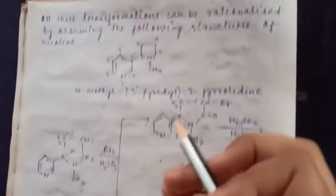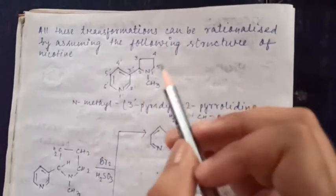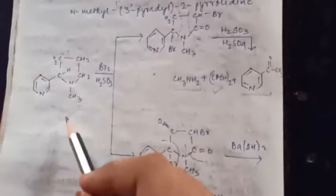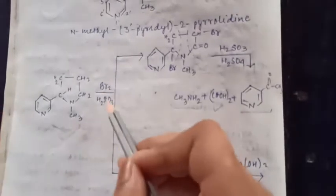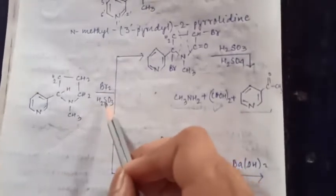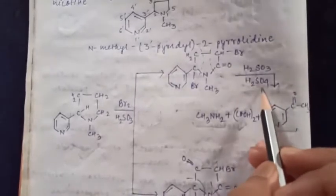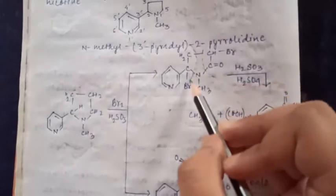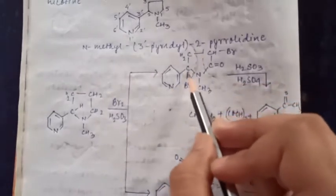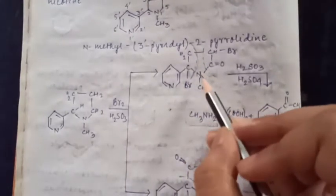Now let's see. So we have now assumed this structure of nicotine. Now assuming this structure, we will now see reactions five, six, and seven. So in fifth reaction we saw - this part will form pyridine and this becomes C double bond O, and this CH3, so acetyl pyridine forms. This part becomes methylamine CH3NH2, and this part becomes COOH COOH, oxalic acid.